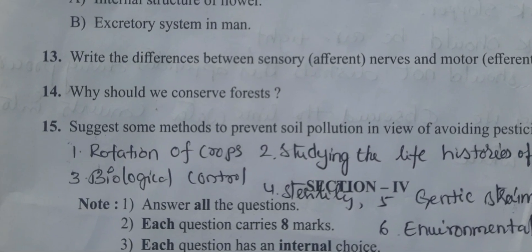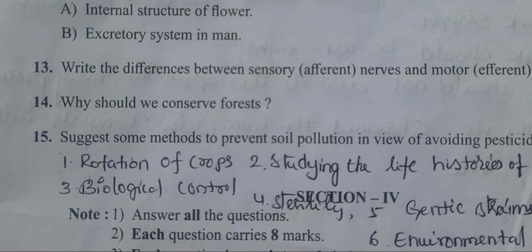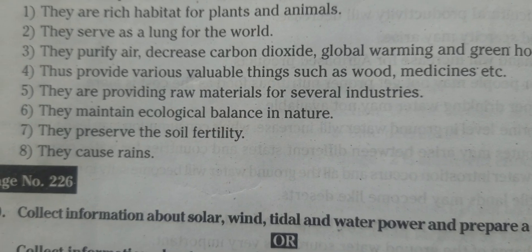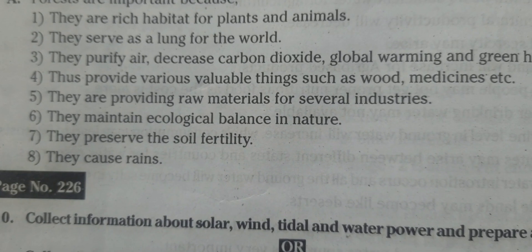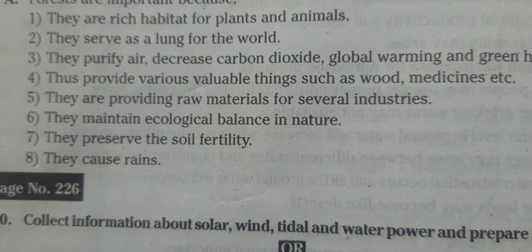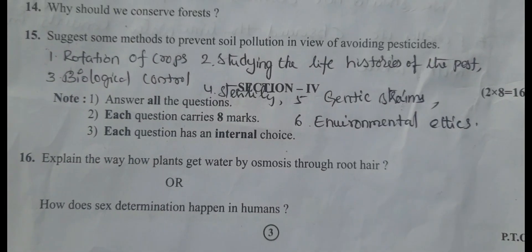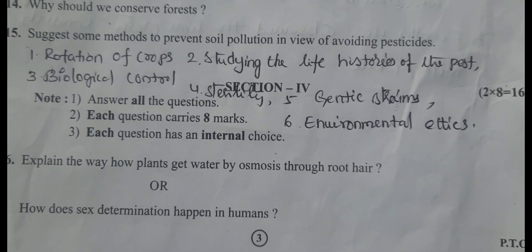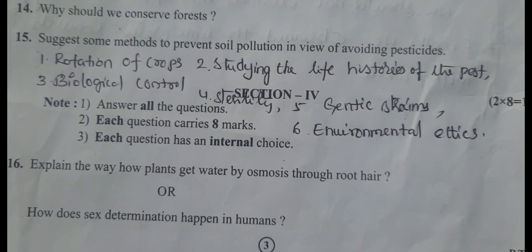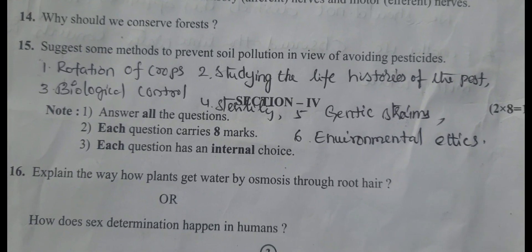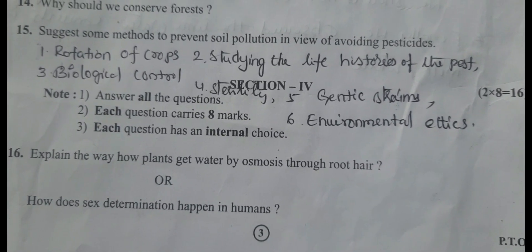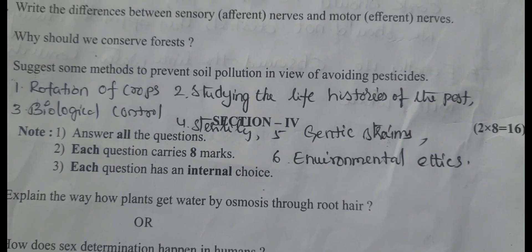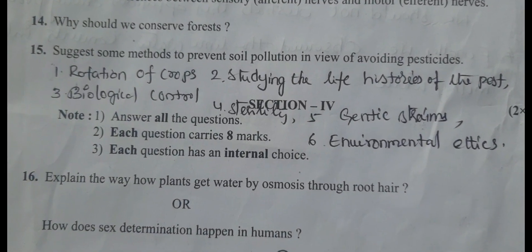Fourteenth question: why should we conserve forests? There are many important points about forest conservation. Fifteenth question: suggest methods to prevent soil pollution by avoiding pesticides. Methods include rotation of crops, studying the life history of the pest, biological control, sterility, genetic strains, and environmental ethics.